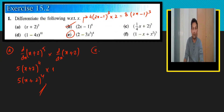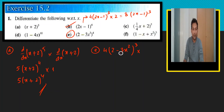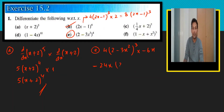For part e: the 4 becomes the coefficient, power reduces by one to 3, I copy the whole bracket, then multiply by the inner differentiation. Inside the bracket: differentiation gives 2, minus zero, minus 3 gives minus 6. Simplifying: 4 times negative 6 is negative 24x, and the answer is negative 24x times (2 minus 3x) to the power 3.